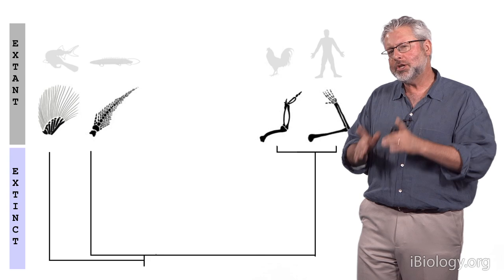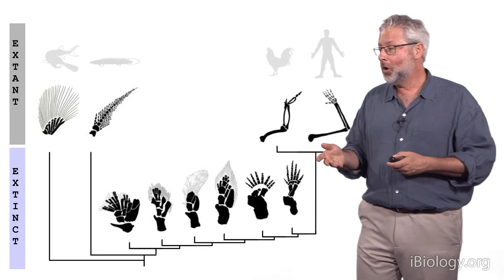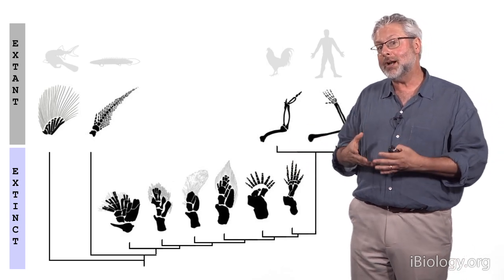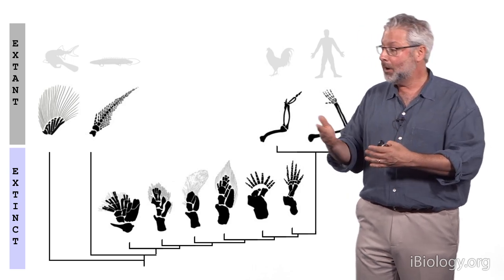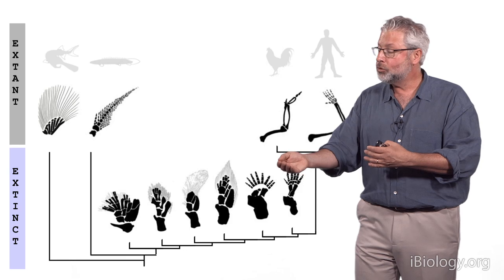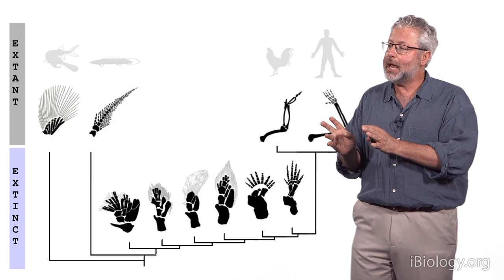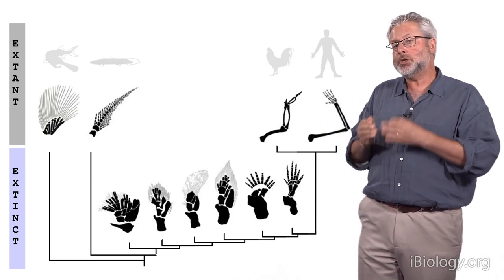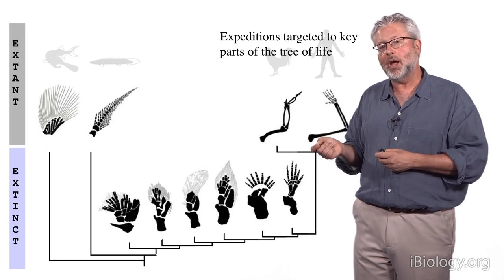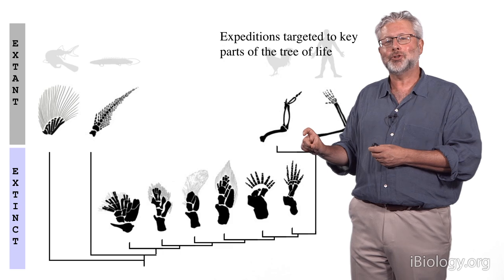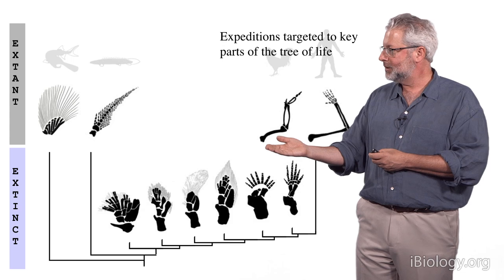Yet we can bridge these gaps when we look at fossils. If we fill this diagram with some of the fossils, you start to see lots of transitional creatures — creatures with thin webbing, thin rays, but also having a one bone, two bone, little bone pattern as well. So if we want to bridge the gap between fins and limbs, we need expeditions targeted to key parts of the tree of life — targeting certain time periods to find fossils that start to bridge that gap.